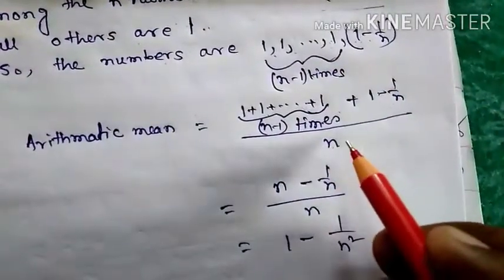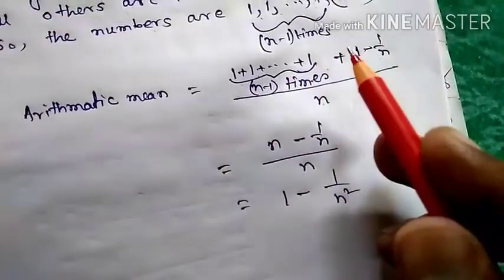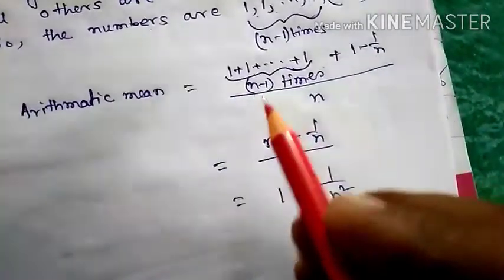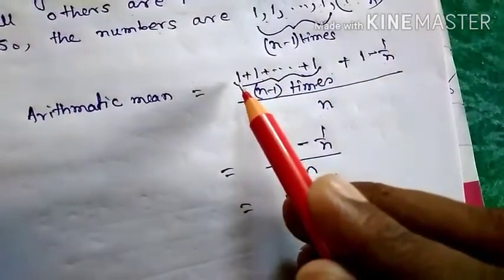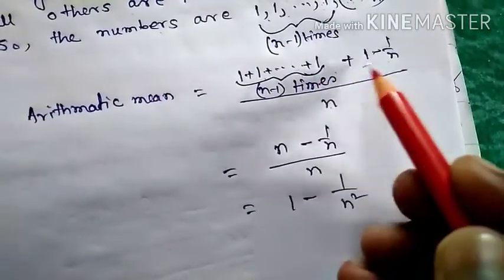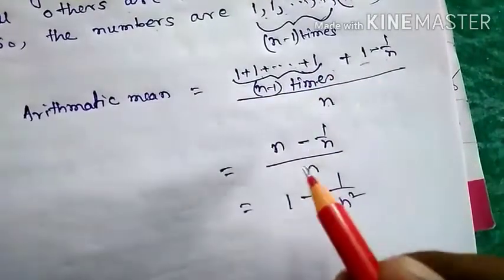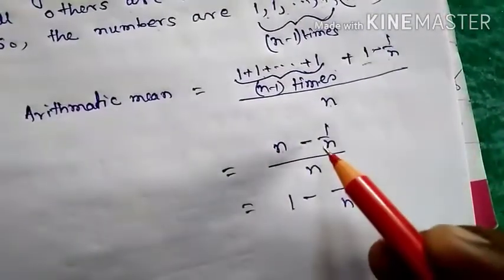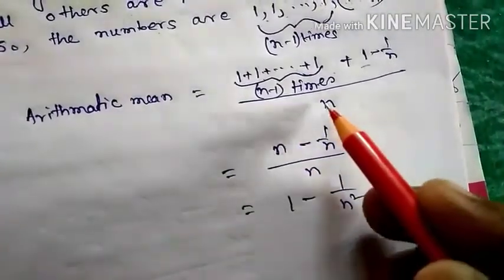So what happens now? There are n minus 1 ones and this is another one, so the number of 1 is n. So if we add 1 n times, that will be n, and minus 1 by n comes. So n minus 1 by n divided by n.